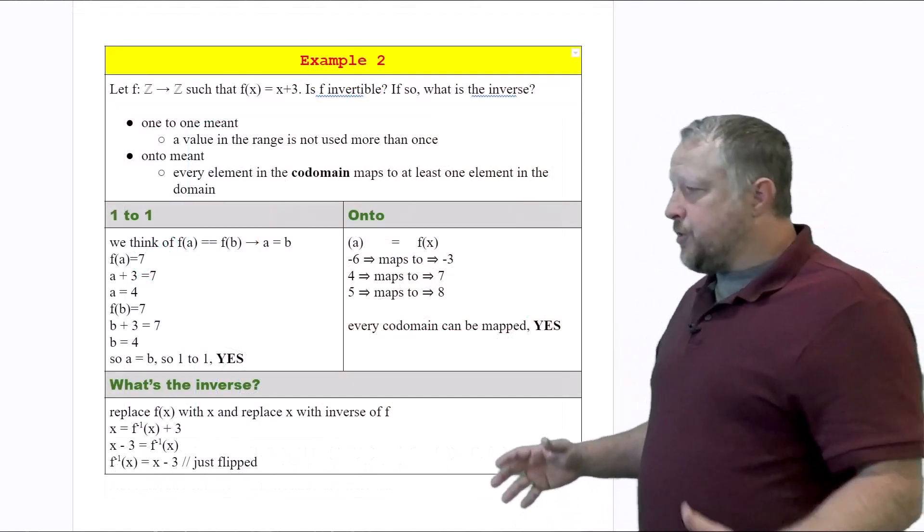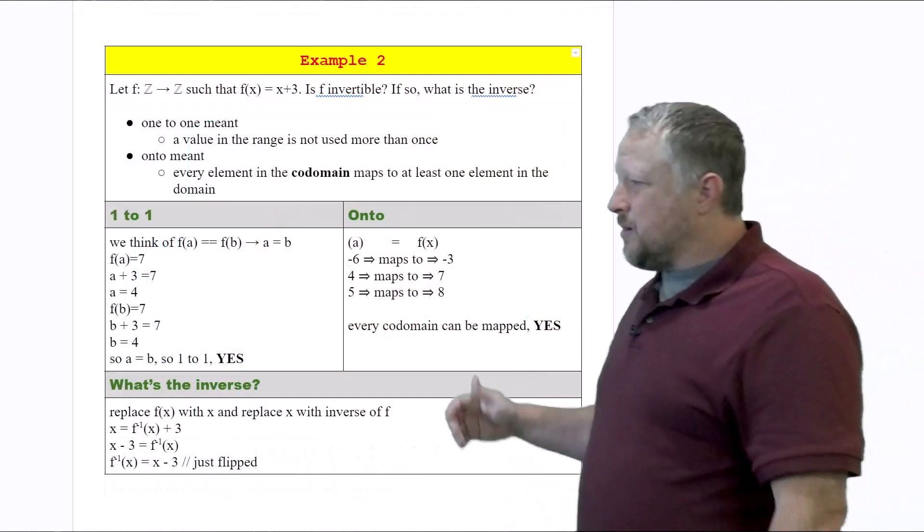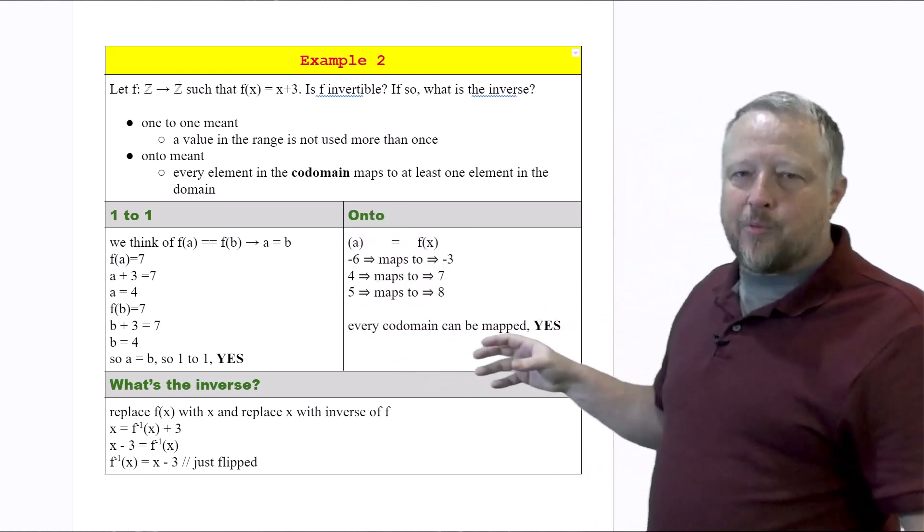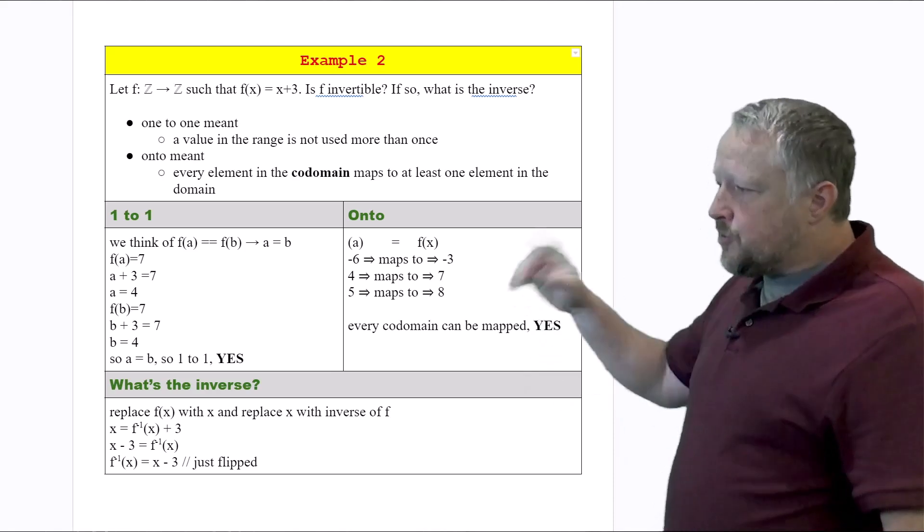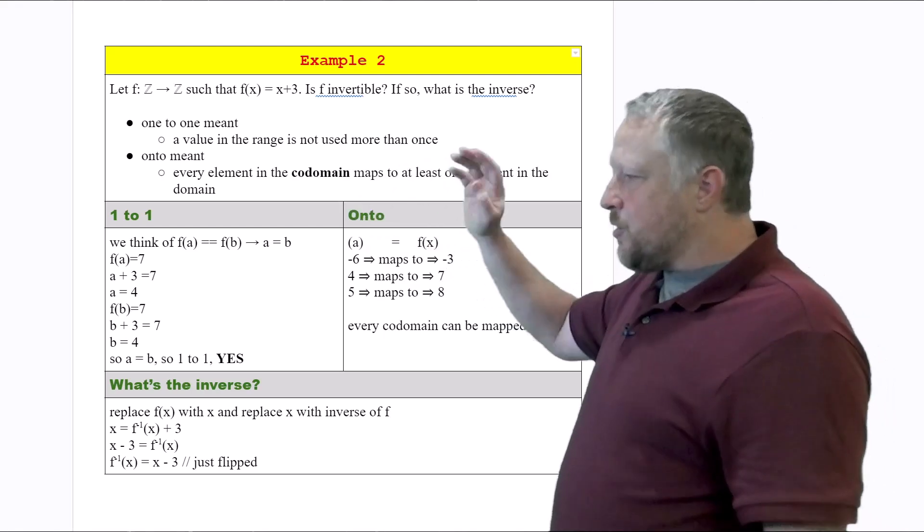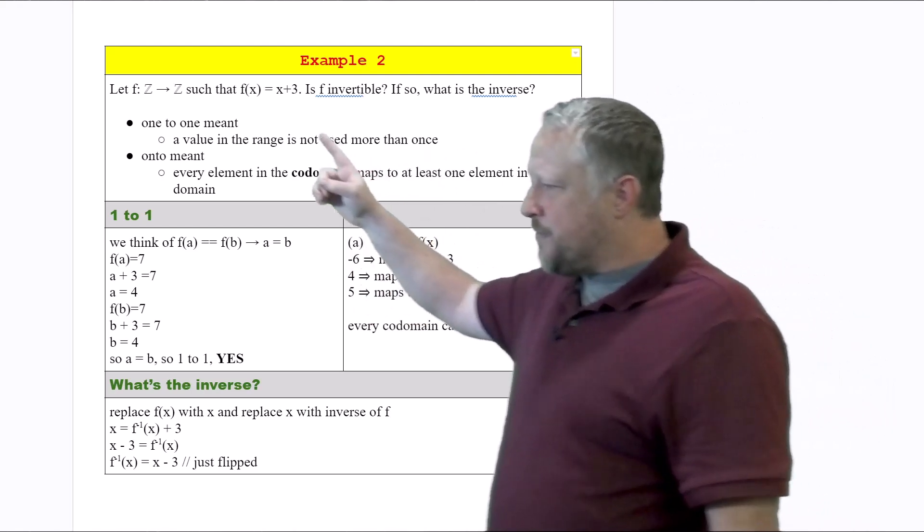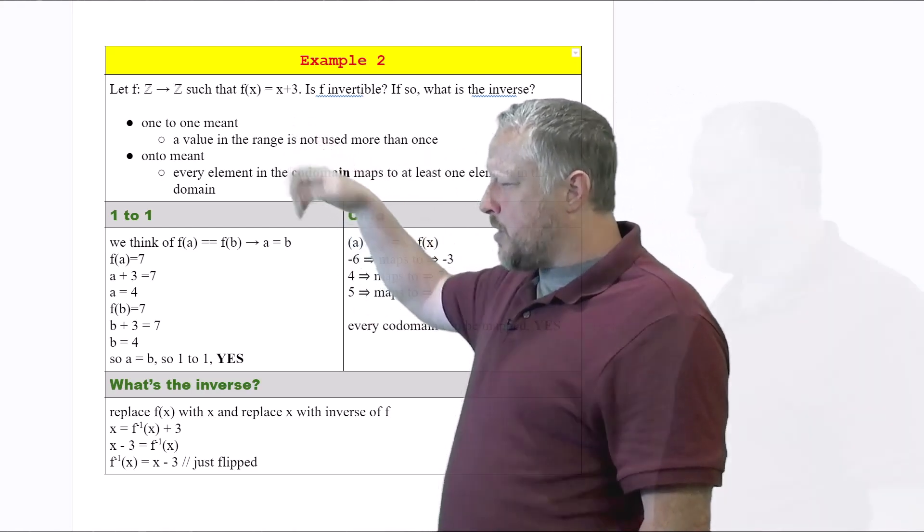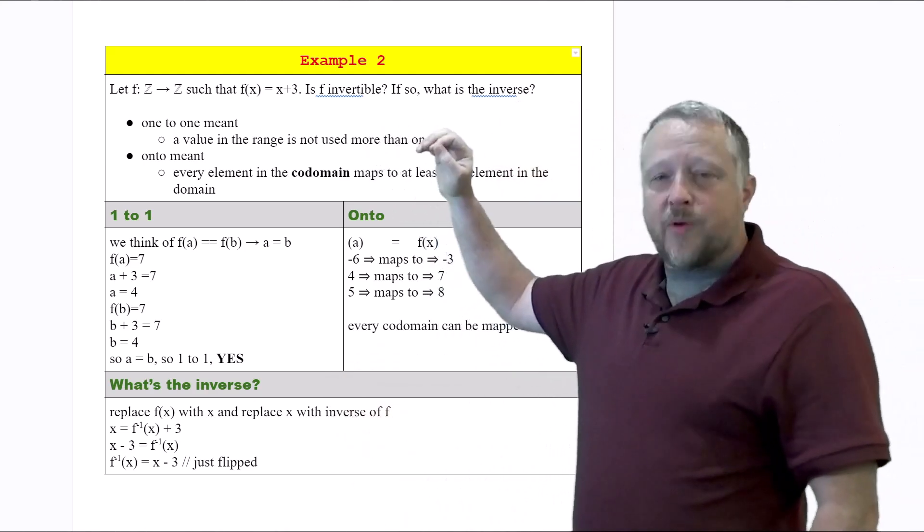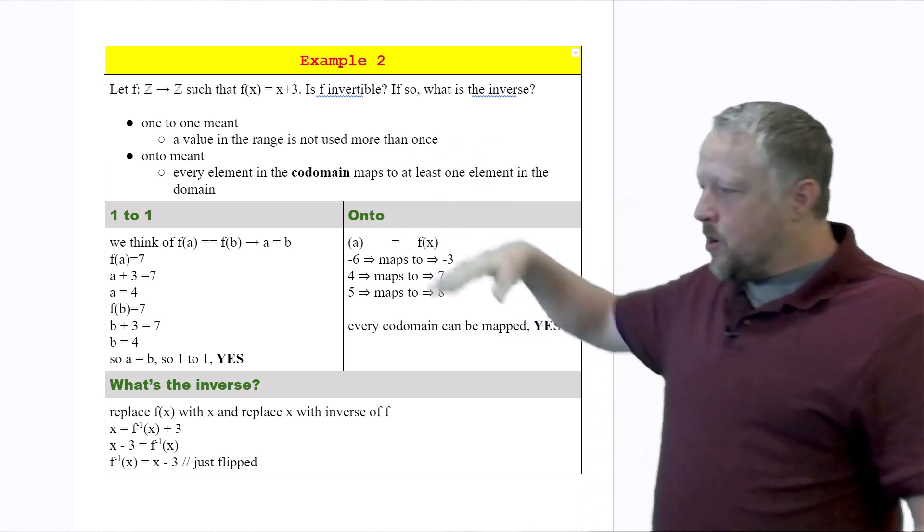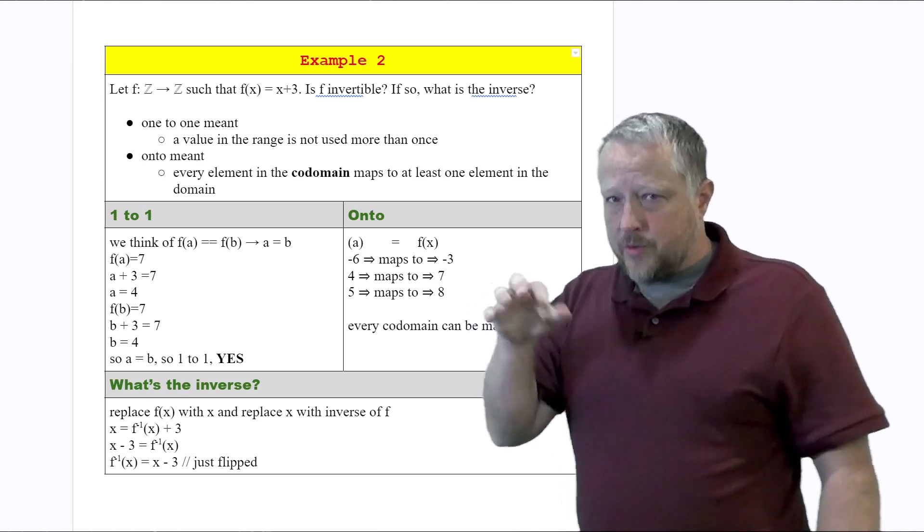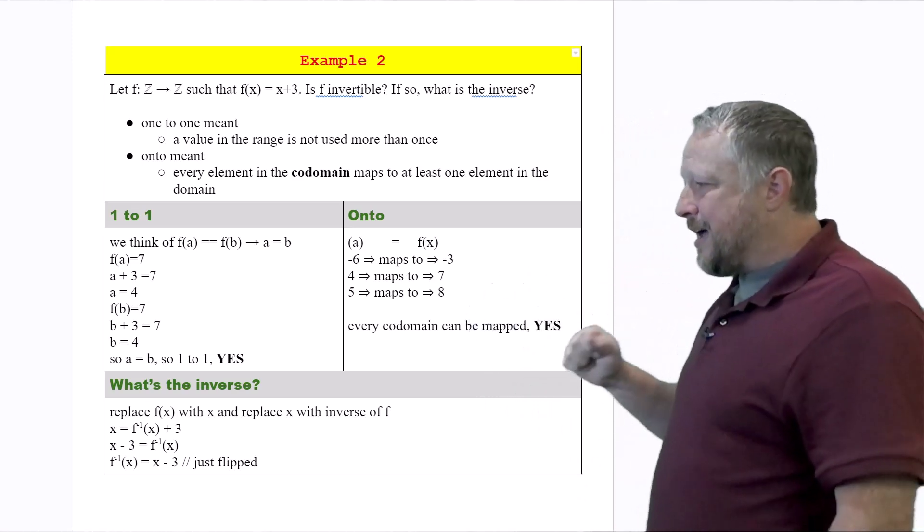In example number two, it's a word problem. Not a big deal. We could still draw this out. So let f from the integers as the x domain, the y domain is going to be integers such that f of x is x plus three. So again, I went ahead and put up our two definitions that we have to have it be one-to-one and onto just to make sure that we're good here. And again, we're using integers too, so we got to be very careful about that as well.